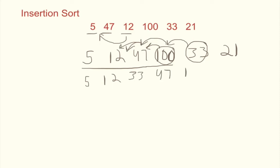And then 21. For the last version we know we have 5, 12, 33, 47, and 100 are all sorted. So for the last one you take 21 and compare it to 100. We know it's less than 100. We compare it to 47, we know it's less than 47. We compare it to 33, it's still less than 33. We compare it to 12. We see it's more than 12, so we know it goes right here.